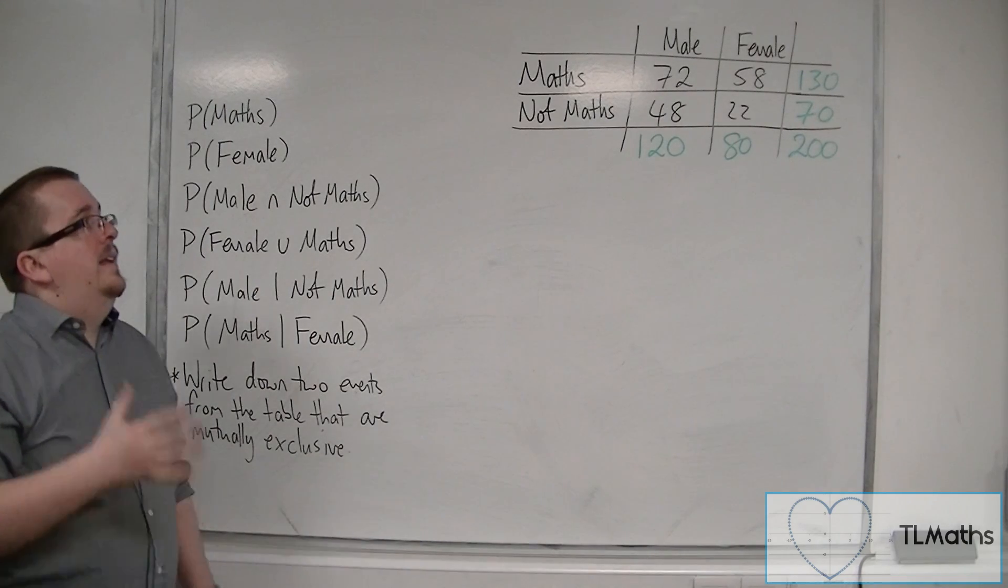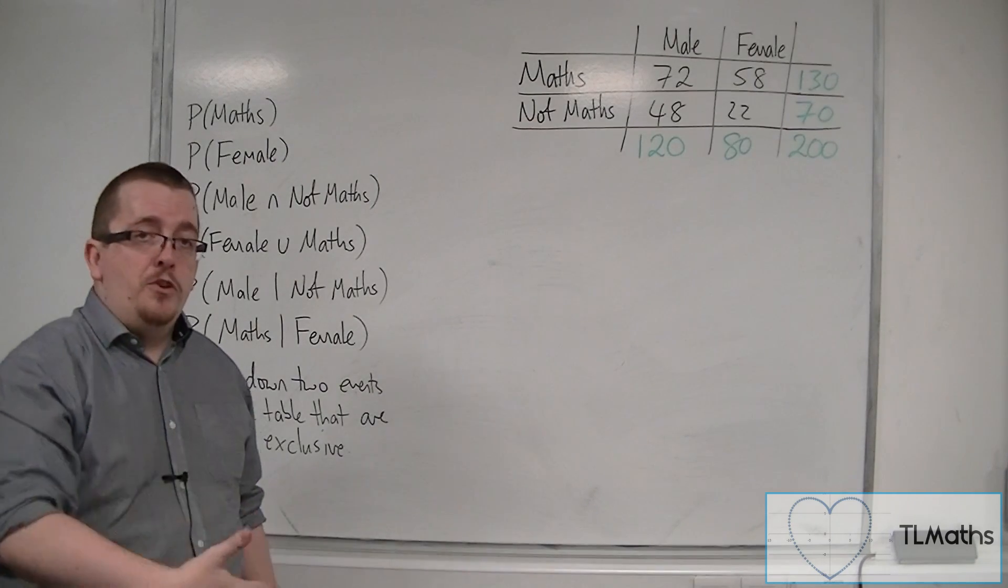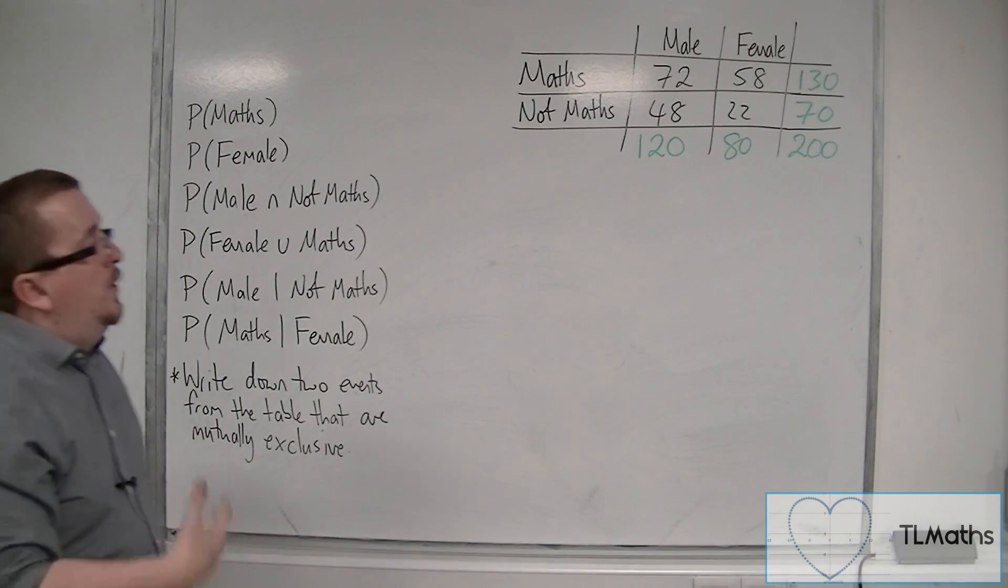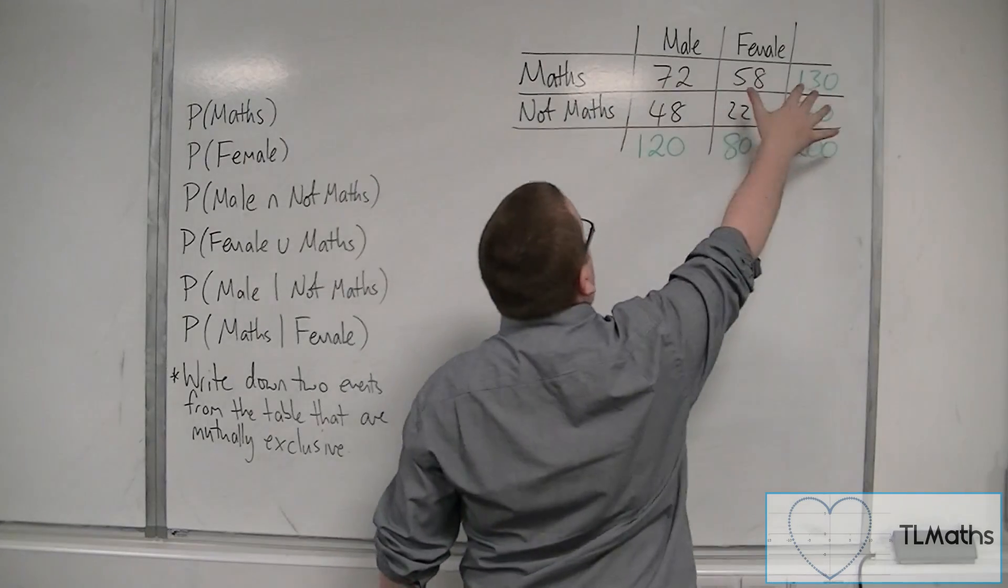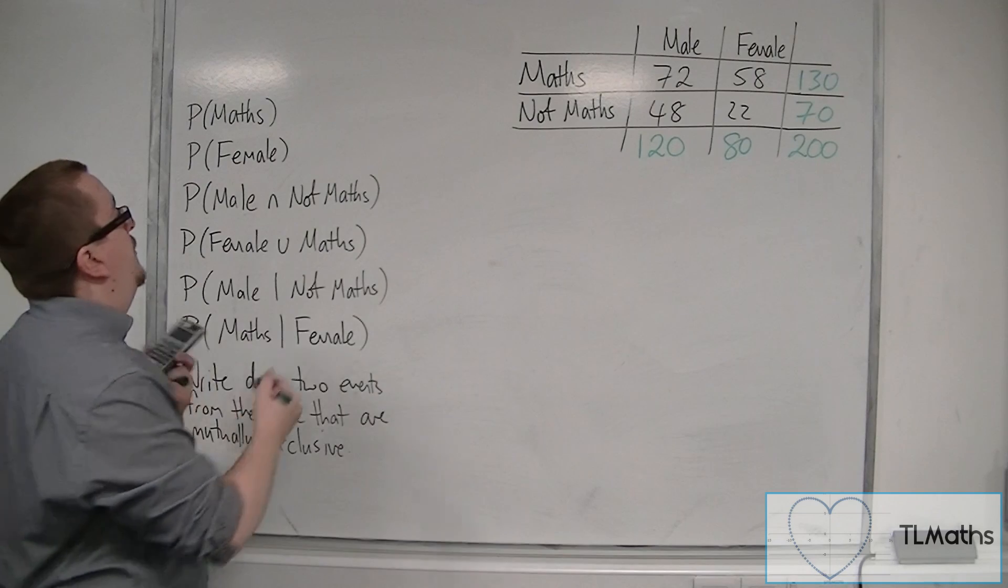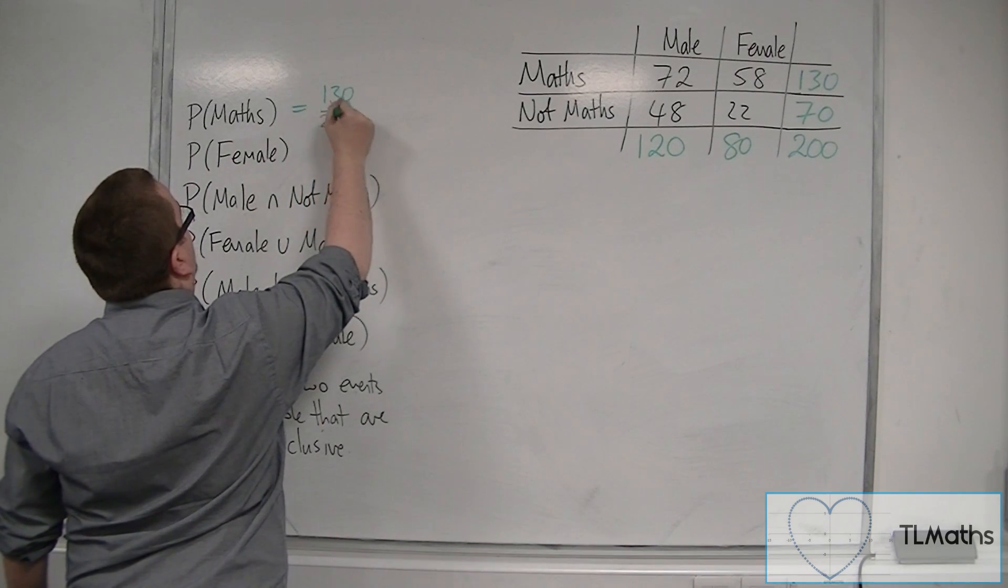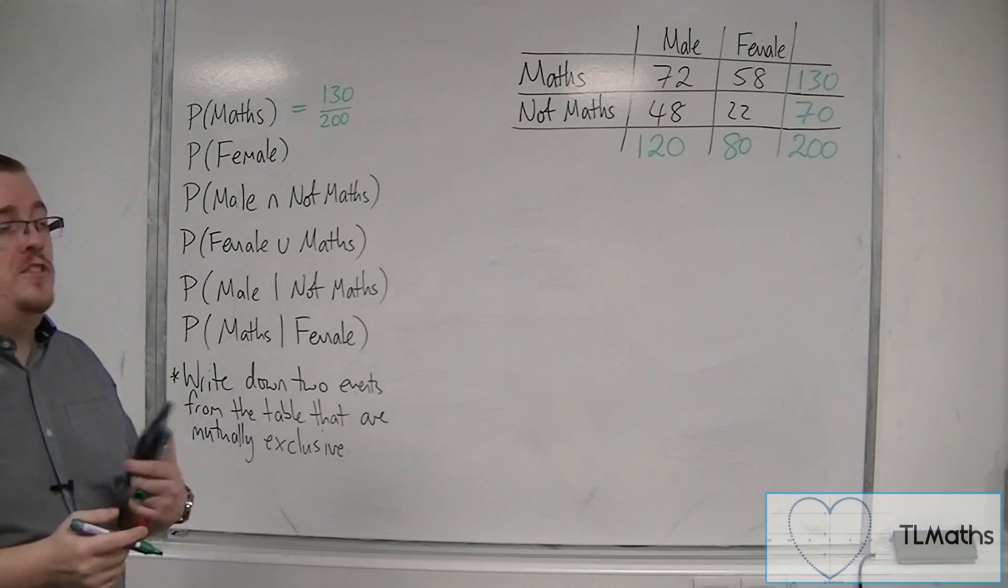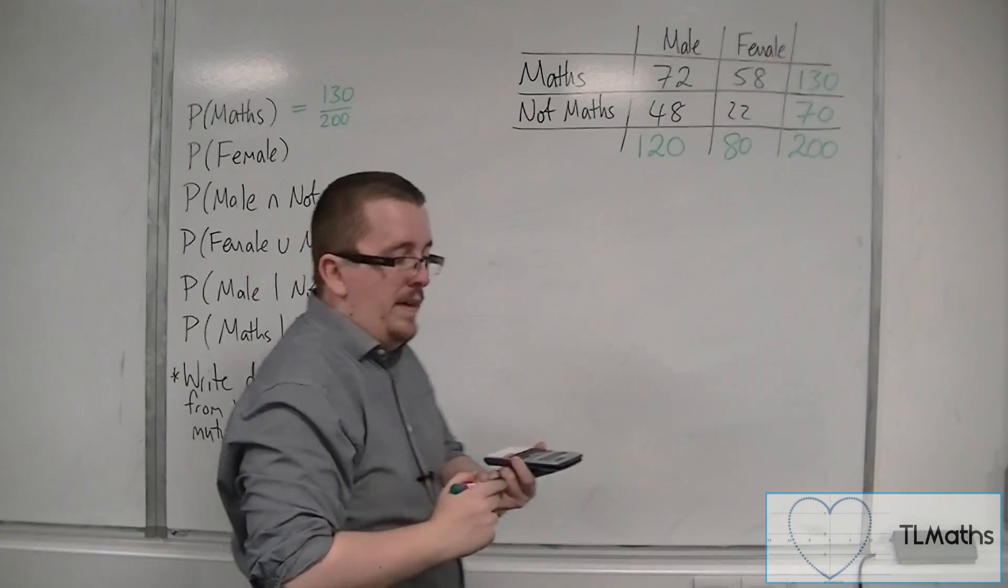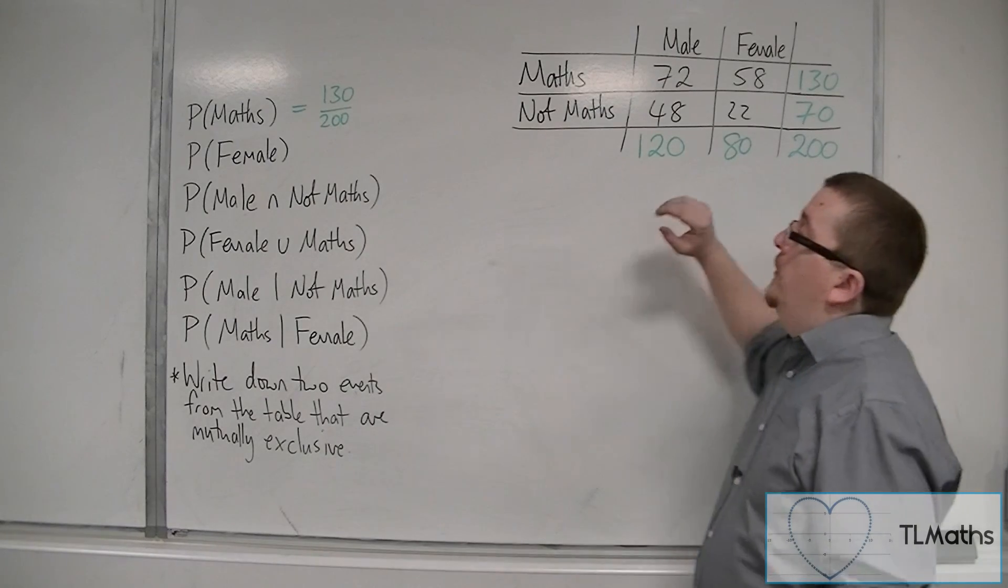So now let's say we want to work out what is the probability of picking a student that studies maths. Well there are 130 students studying maths out of 200, and so the probability is 130 out of 200. Now you can simplify these fractions down if you like. I'm not going to worry about that for the time being in this video.